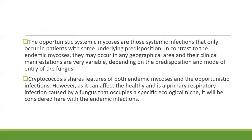The opportunistic systemic mycoses are those systemic infections that only occur in patients with some underlying predisposition. In contrast to the endemic mycoses, they may occur in any geographic area, and their clinical manifestations are very variable depending upon the predisposition and mode of entry of the fungus. Cryptococcus shares features of both endemic and opportunistic infections, as it can affect healthy individuals and is a primary respiratory infection, though many cases we see now are associated with AIDS.